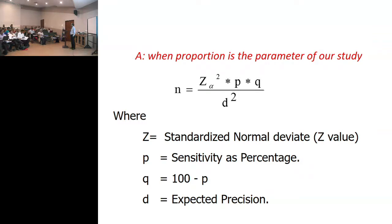So here we are phrasing it: she said she wanted to have 90% sensitivity with a precision of 10%. Therefore D equals 10. Now you can calculate how many subjects you need to study. Please remember, this formula talks about only sensitivity.